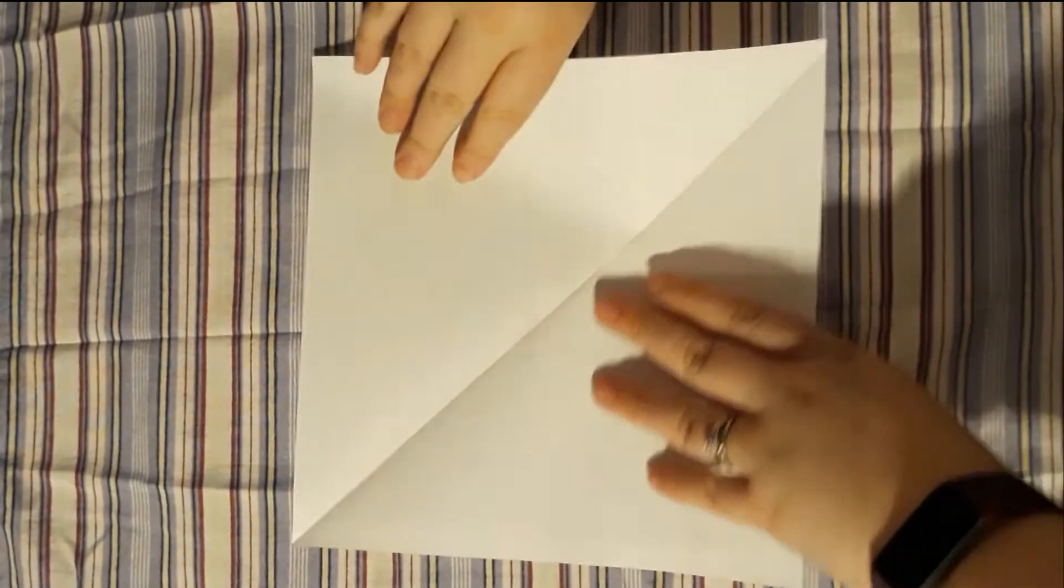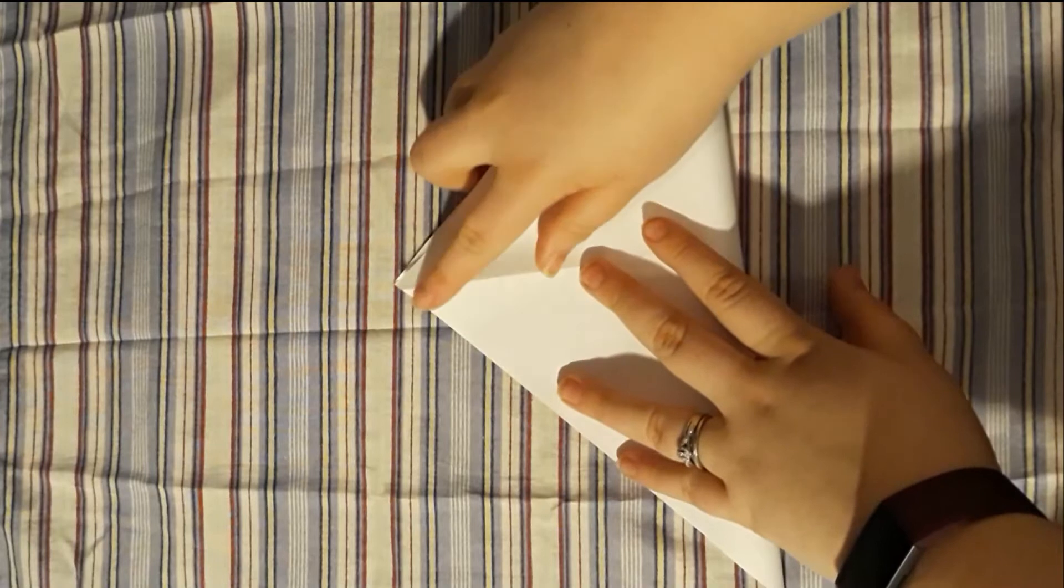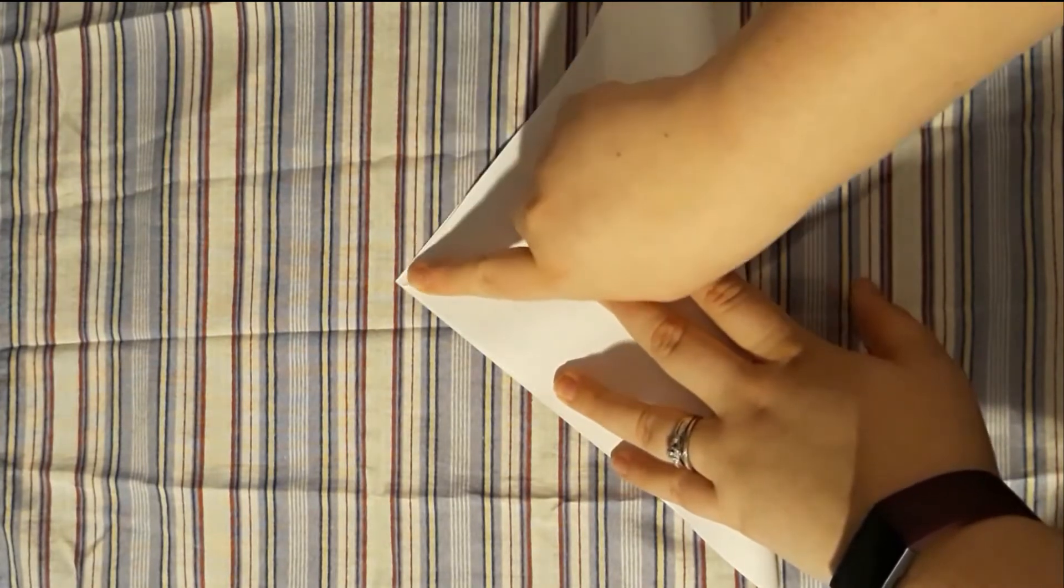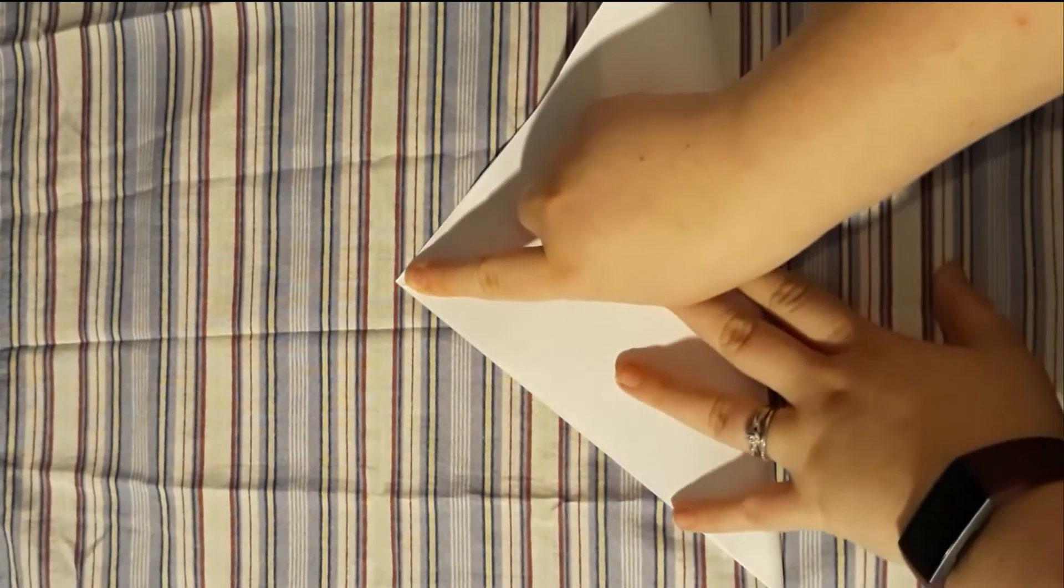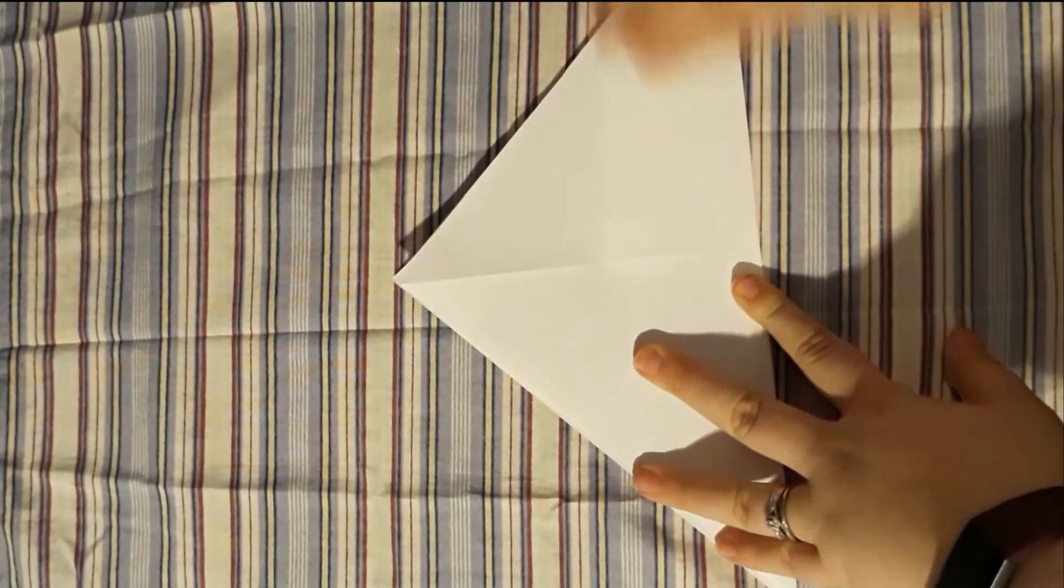Next, create another crease through your square by folding over one corner of the square like I am doing. Make sure your corners are lined up as perfectly as possible. Press down to make a solid crease.